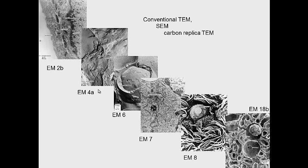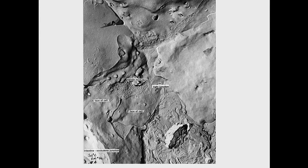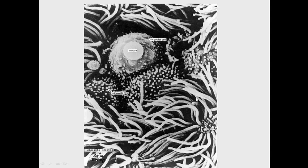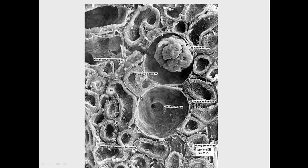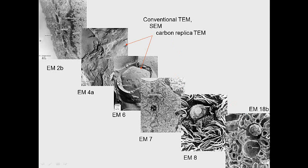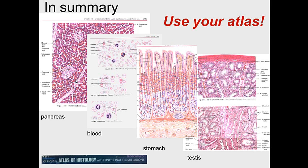There are different types of electron microscopy. Conventional transmission electron microscopy (TEM) is what we have seen so far. Carbon replica electron microscopy is good for surface detail - here we see the zona occludens where two cells are attached, and nuclear pores on a lymphocyte. Scanning electron microscopy (SEM) is also good for surface detail; this SEM of a kidney shows a nephron glomerulus. To summarize: conventional TEM, carbon replicas, and scanning EM are the three types shown.